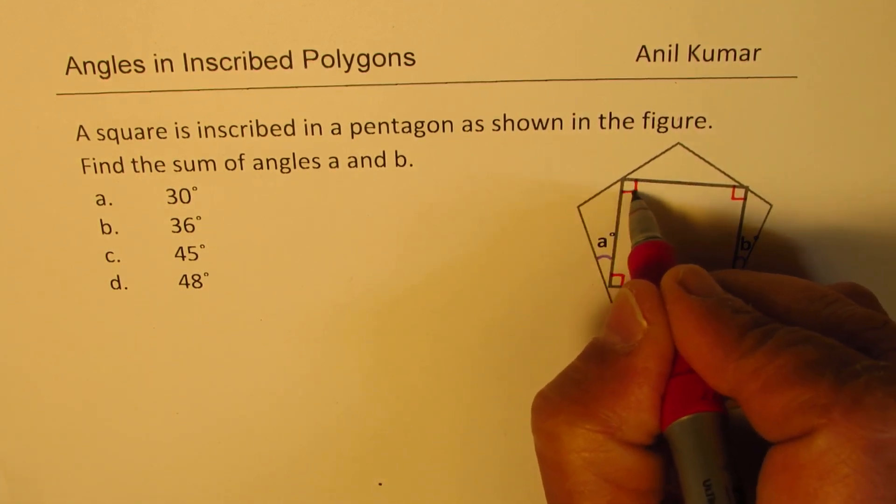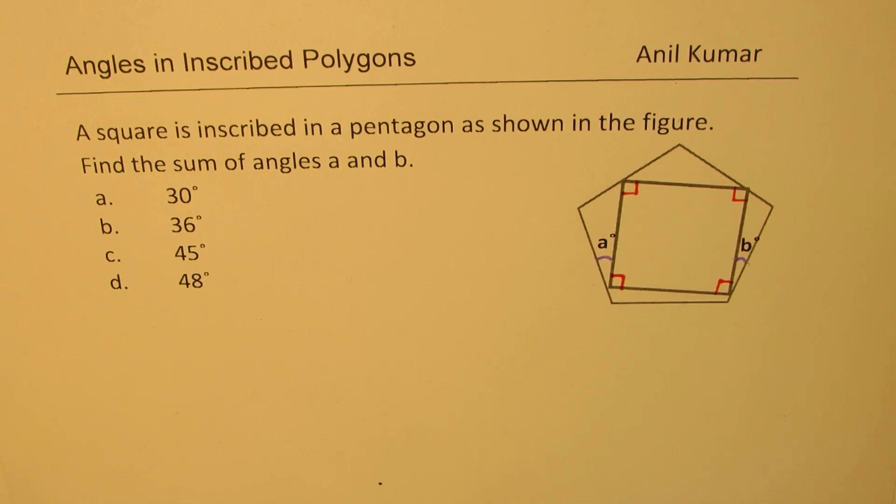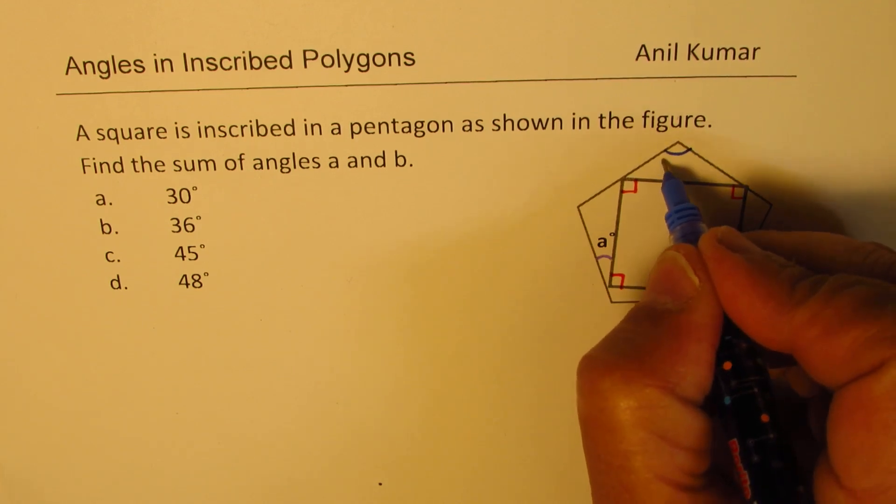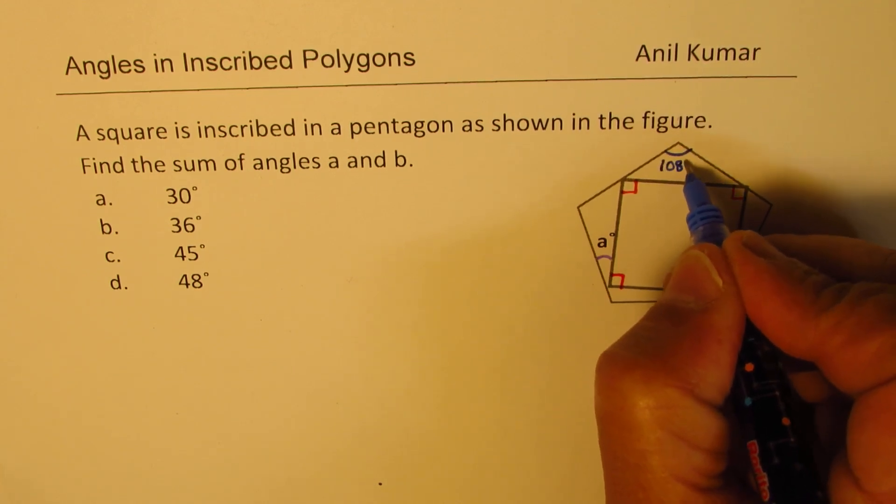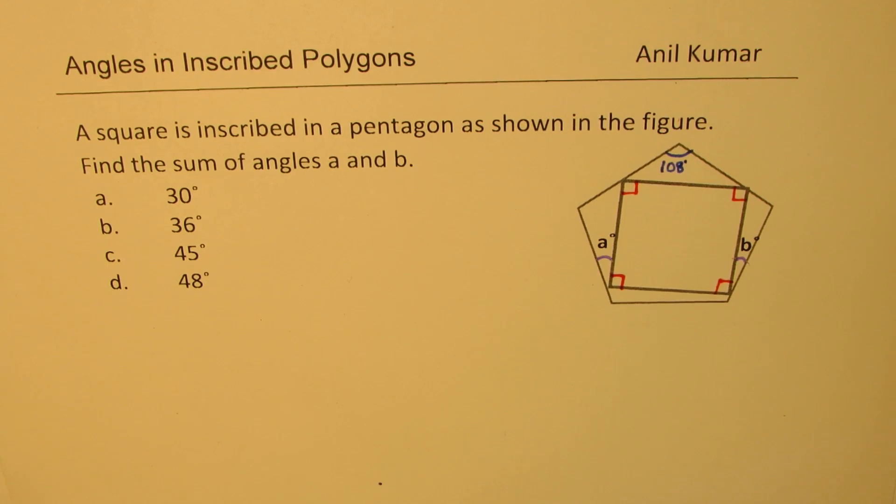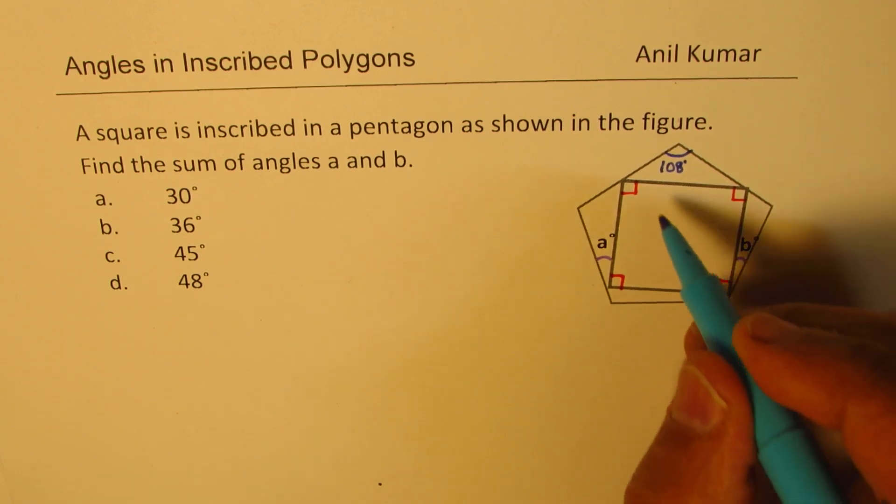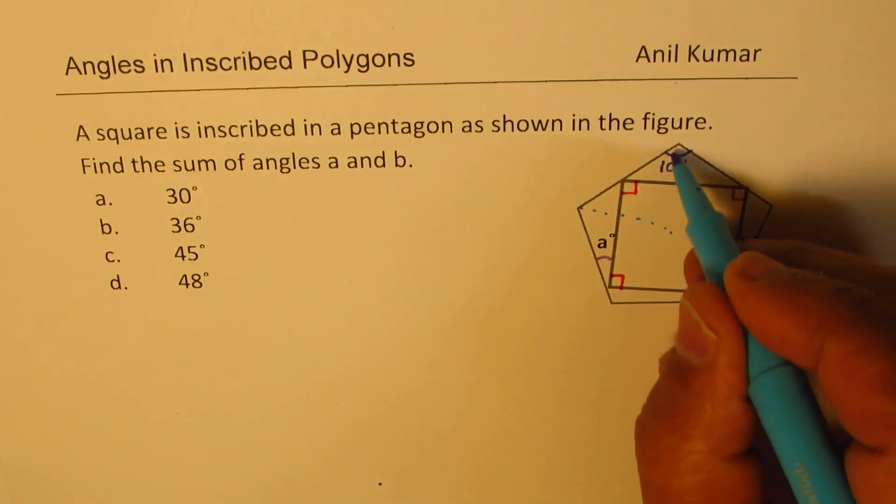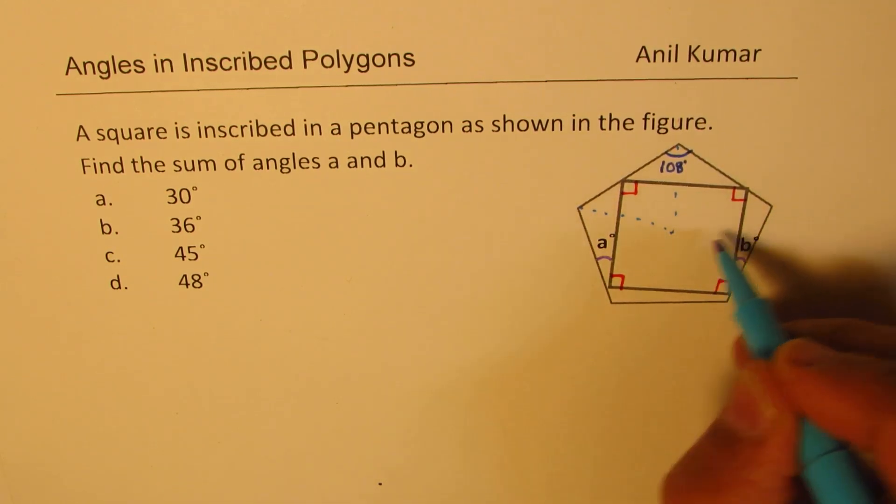Now how about a pentagon? Some of you may remember the angles. These angles are 108 degrees. Each angle is 108 degrees. Now how do we find this? Well, the method to find the given angle is—I'm extending this to parts which may not be really required for many of you.